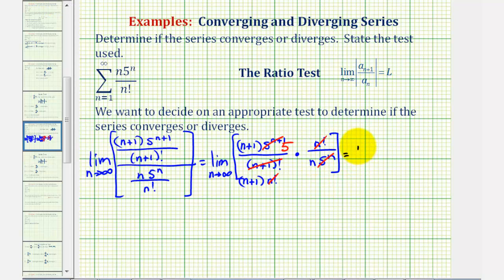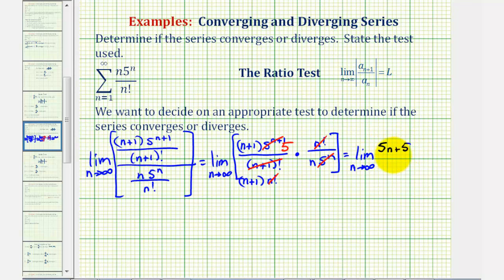This is equal to the limit as n approaches infinity. On top we just have five times n plus one, that's going to be five n plus five. And on the bottom, we just have n plus one times n, which would be n squared plus n. Notice the degree of the numerator is one and the degree of the denominator is two. Since the degree of the denominator is greater than the degree of the numerator, this limit is equal to zero, since the denominator is increasing faster than the numerator.